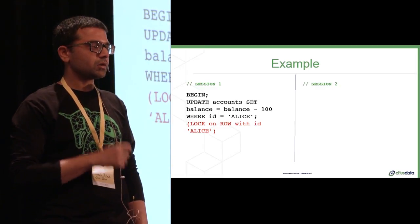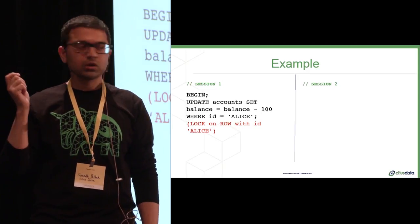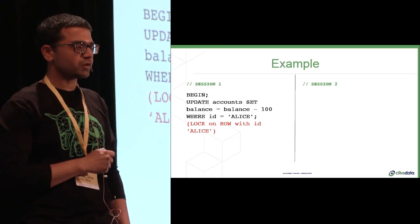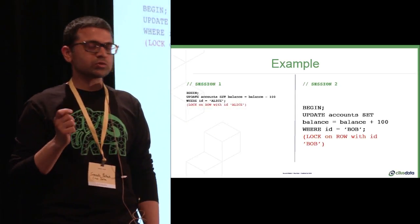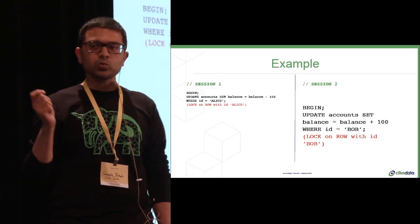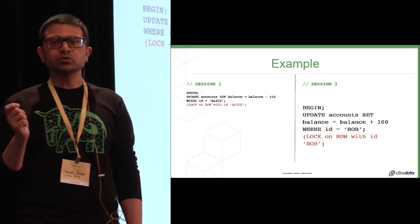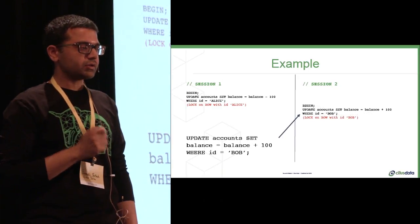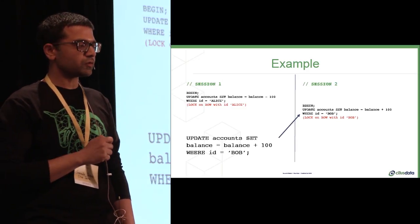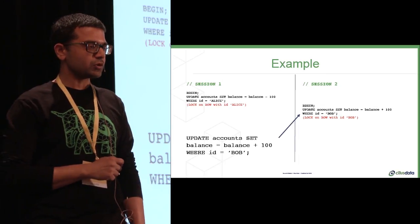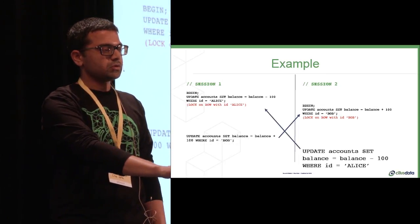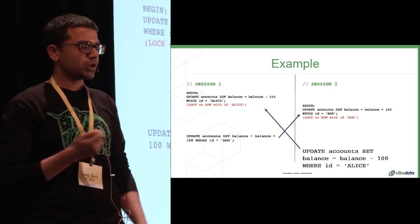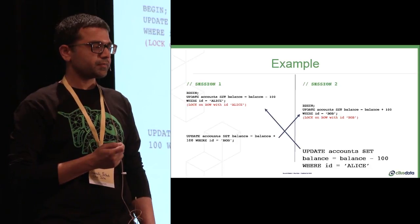So let's walk through how this would happen. Again, the same money transfer as an example. Session one comes along and updates the balance for Alice. In this case, PostgreSQL takes a row-level lock on the row for Alice. Session two comes along and updates the balance for Bob. It acquires a row-level lock for the row for Bob. At this point, nothing is wrong, and no one is waiting on anybody else. Session one then tries to update the row for Bob, but it cannot do so, because session two holds a lock for that row. So session one waits, waiting for the lock to be released. Session two then comes along and tries to update the row for Alice, and it cannot do so, because session one holds a lock for that row. Now both sessions are waiting on each other, and we are deadlocked. No progress can be made at this point.